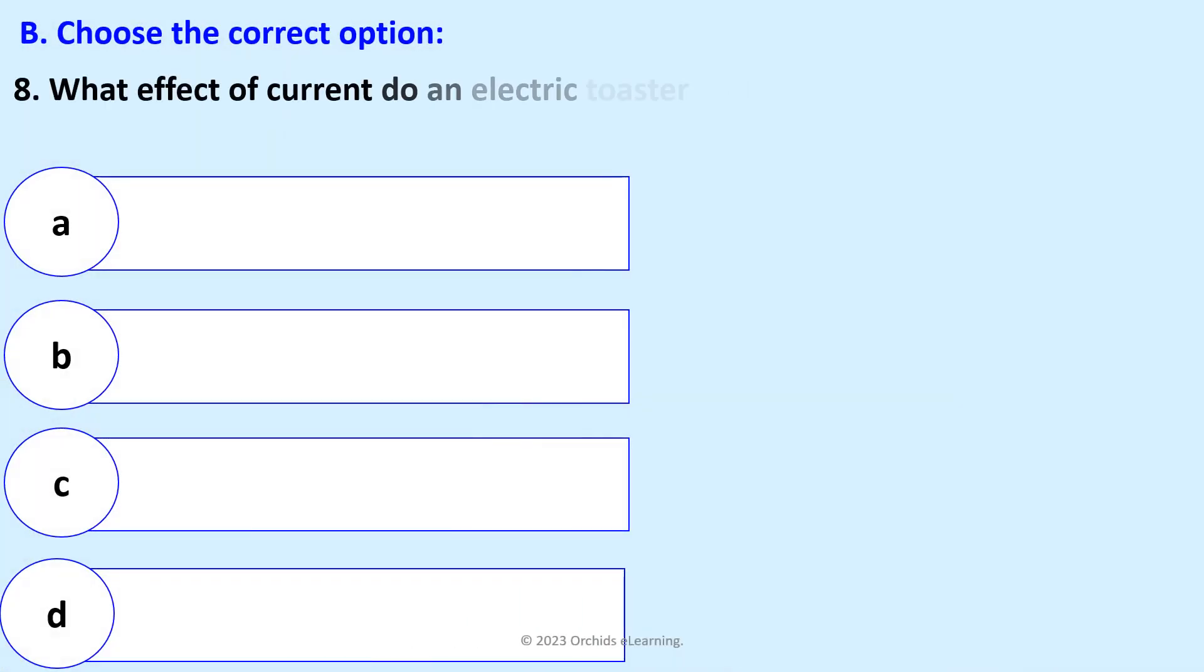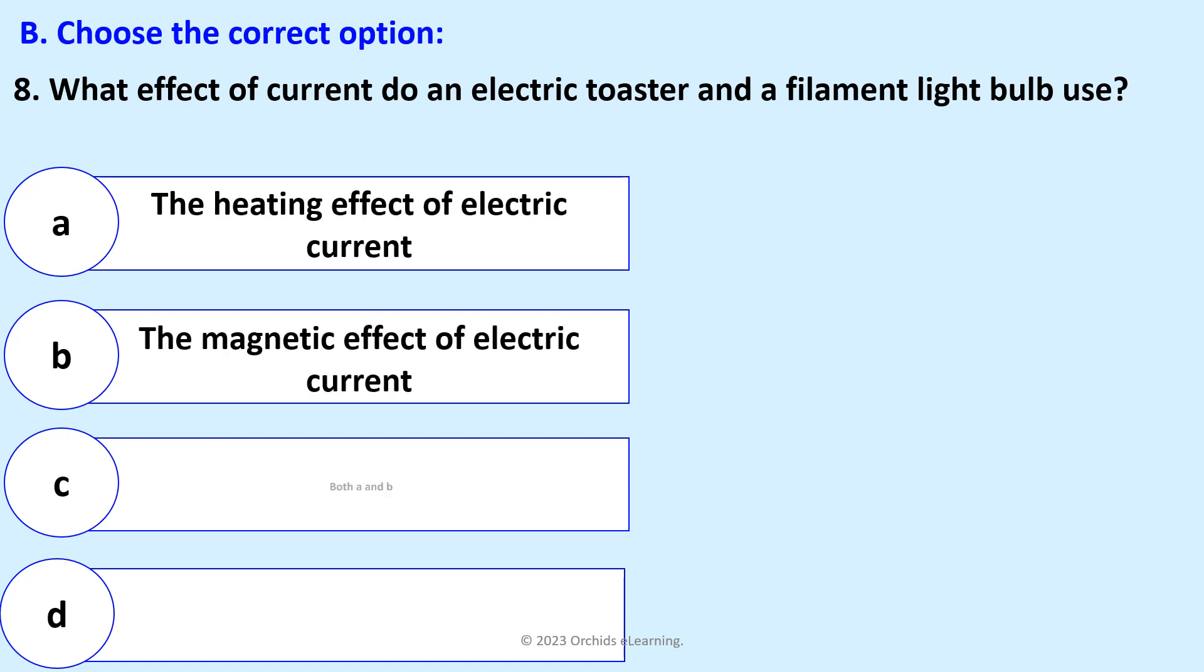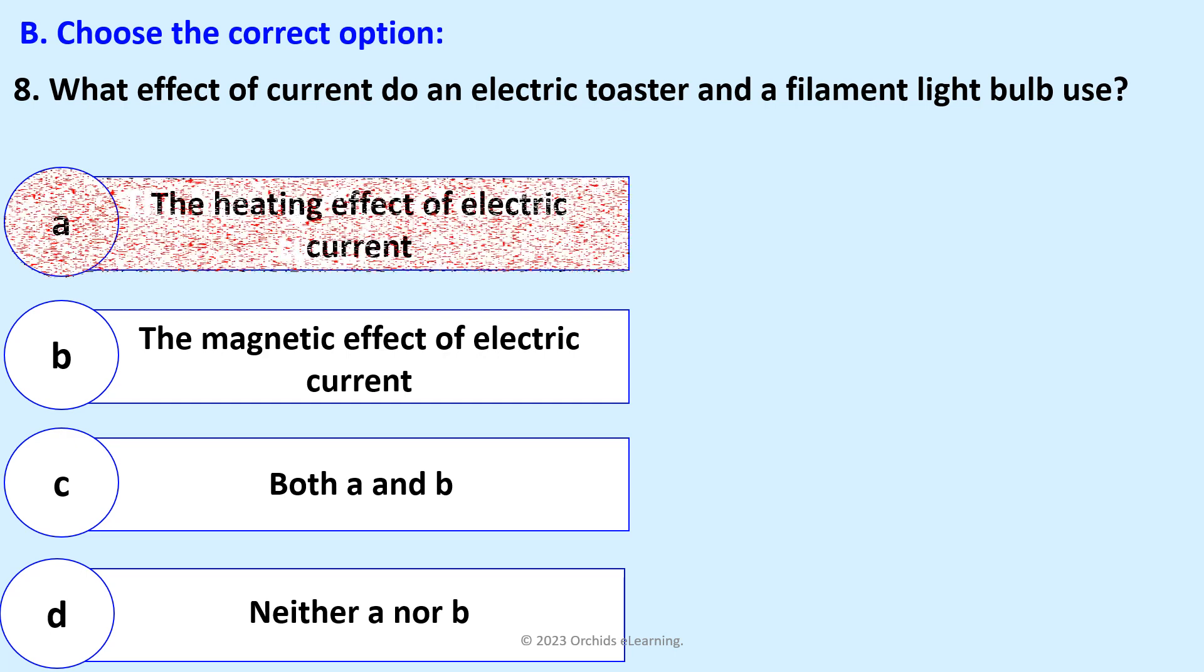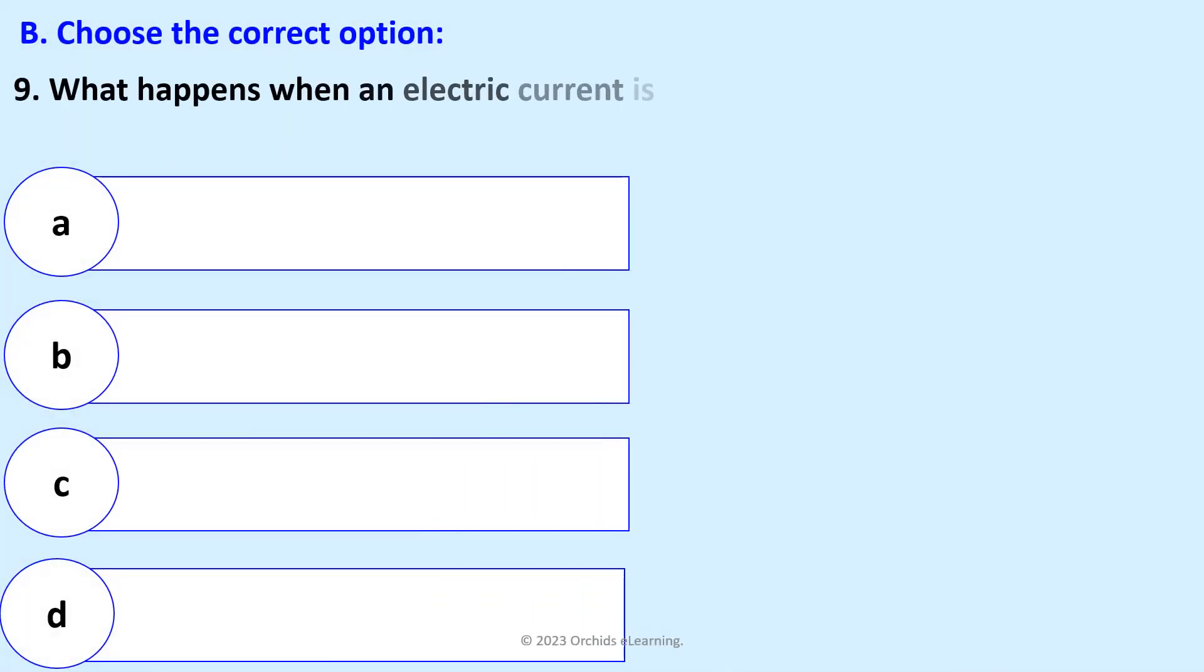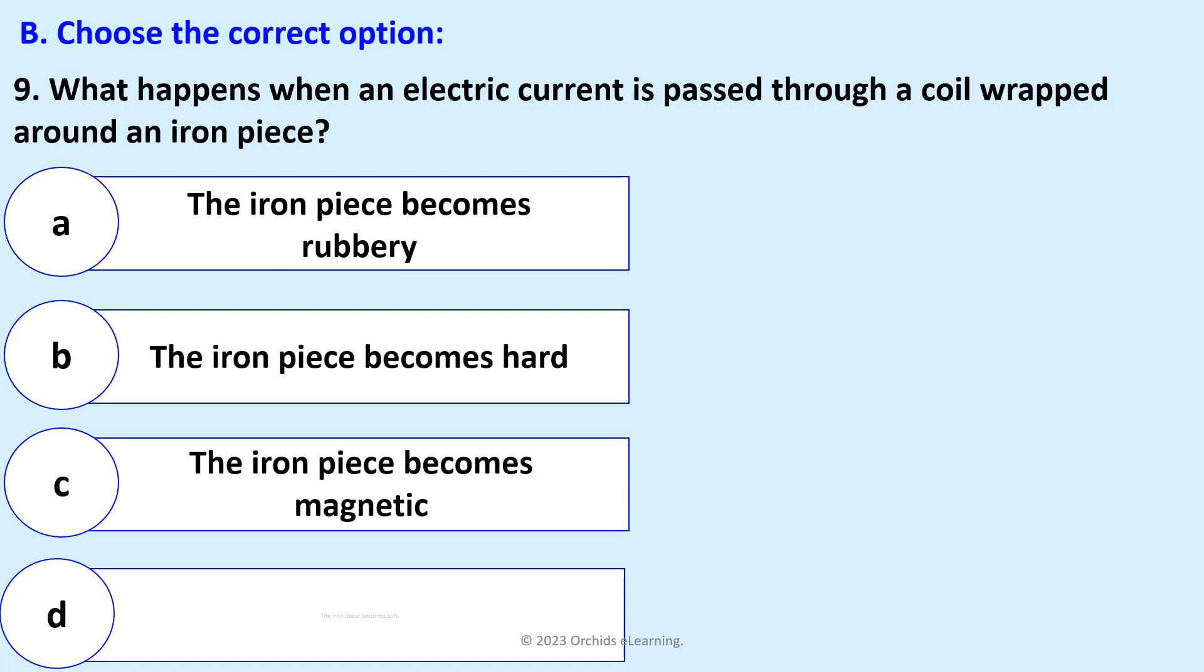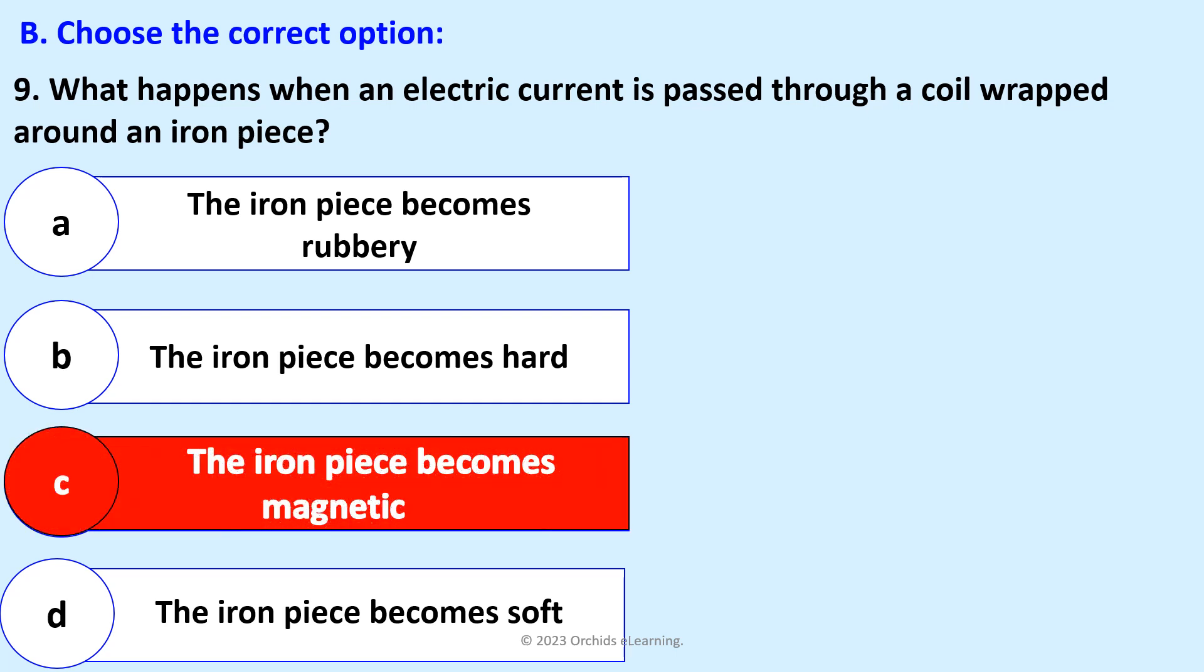What effect of current does an electric toaster and a filament light bulb use? The heating effect of electric current. What happens when an electric current is passed through a coil wrapped around an iron piece?